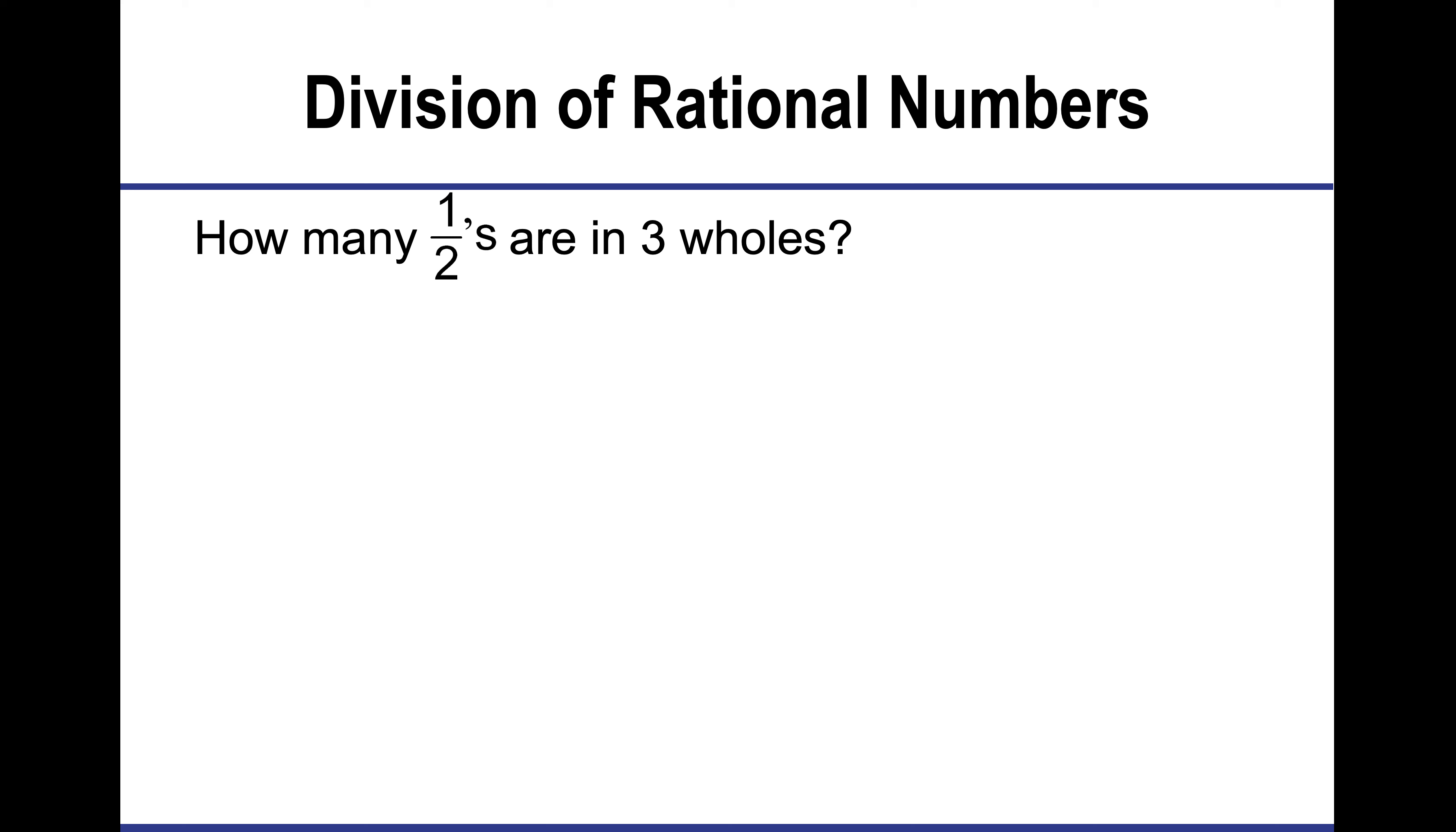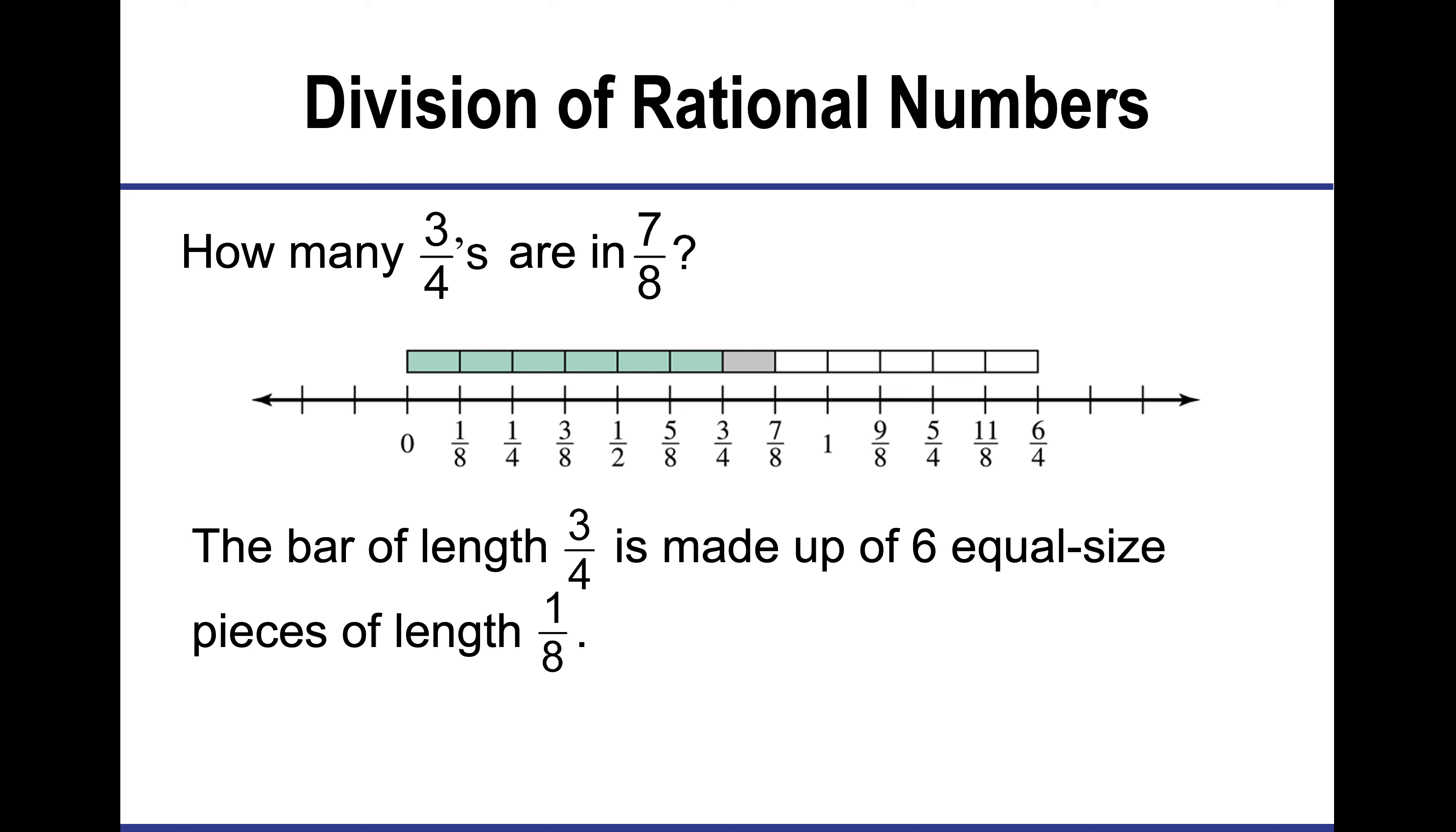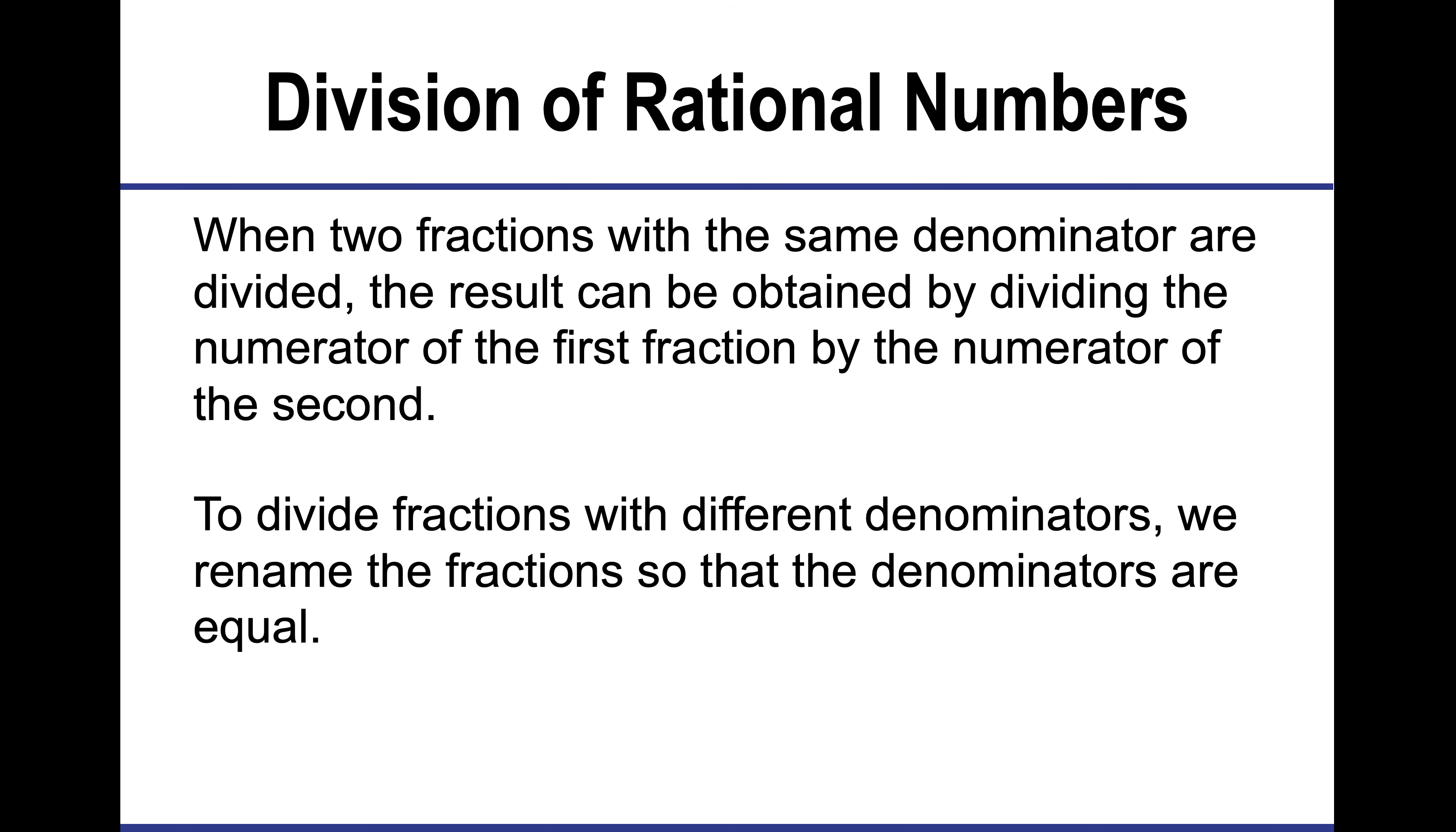The division of rational numbers is a different concept from multiplication. When I'm using division, it works slightly differently. I don't divide straight across. When I use division, I'm actually going to flip and multiply. If I want to divide two rational numbers, I'm going to flip the second one and multiply by it. If I have two fractions with the same denominator, the result is going to be obtained by dividing the numerator of the first fraction by the numerator of the second, because the denominators cancel. If they have different denominators, we're going to rename them so the denominators are equal.